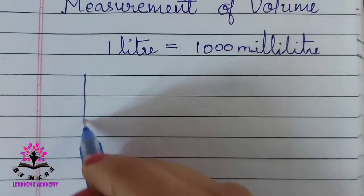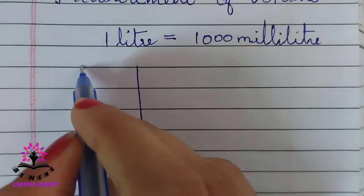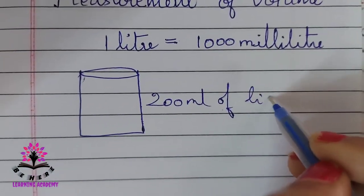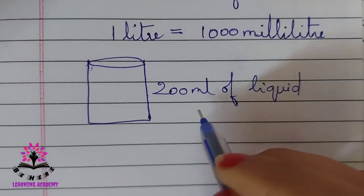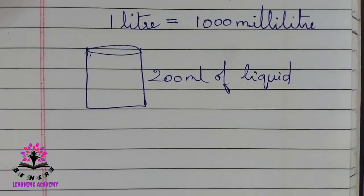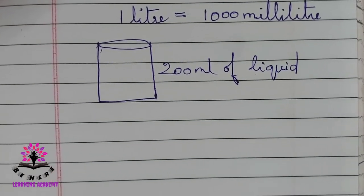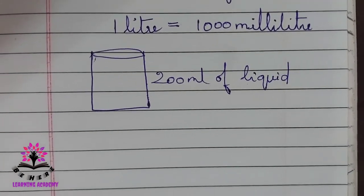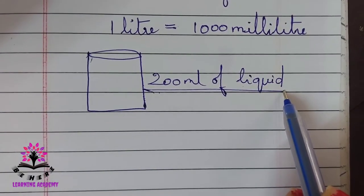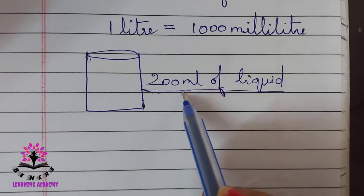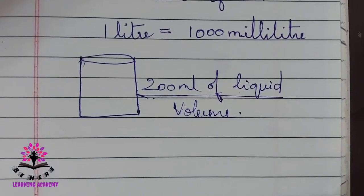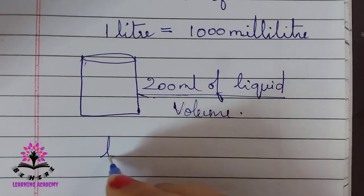If a container can hold 200 ml of liquid, the quantity of liquid in the container is called the volume of the liquid. So the volume here is 200 ml. The standard unit for measuring volume is the liter.